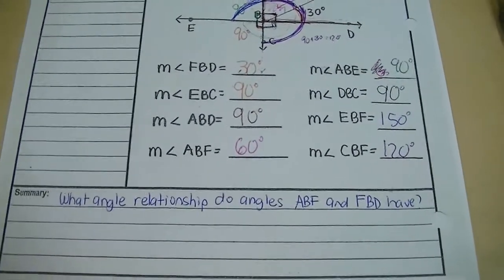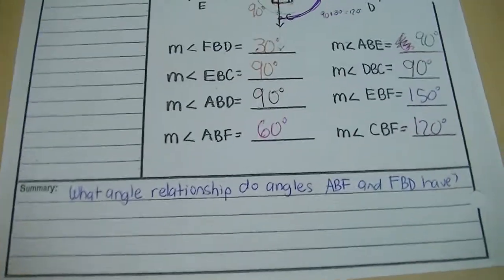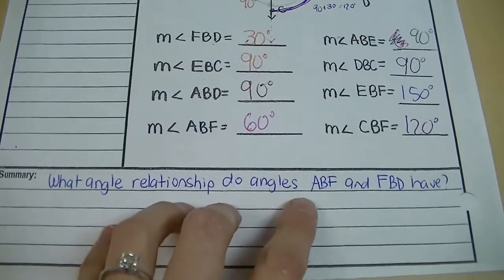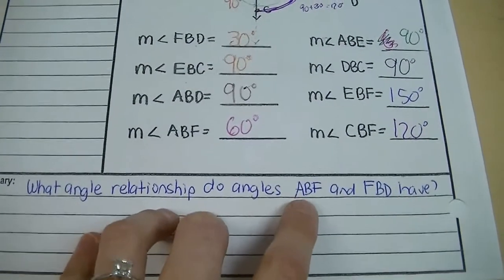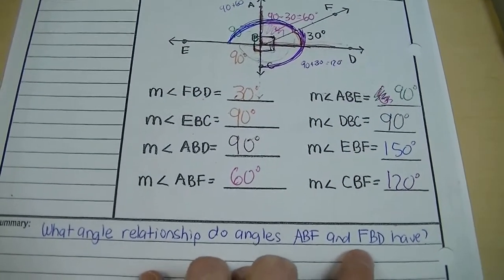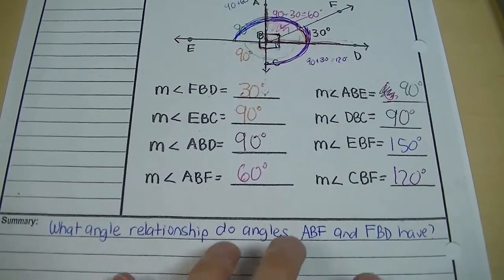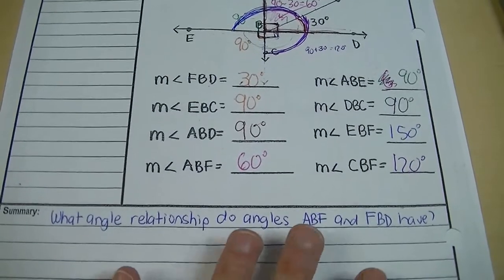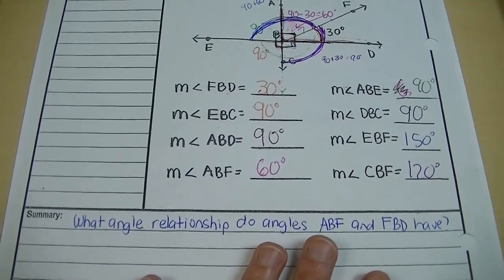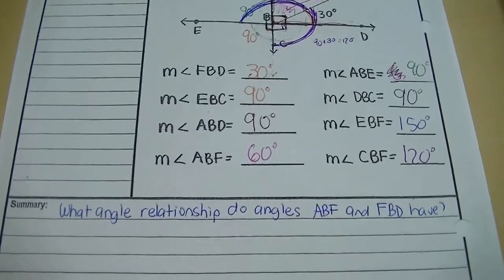In a complete sentence, answer this: what angle relationship do angles ABF and FBD have? What's the relationship — are they vertical, complementary, or supplementary?